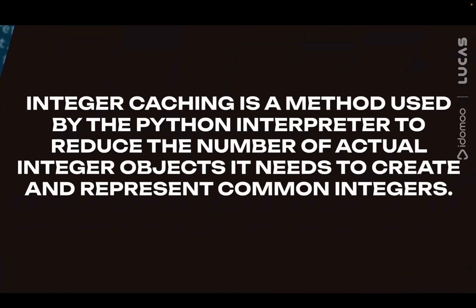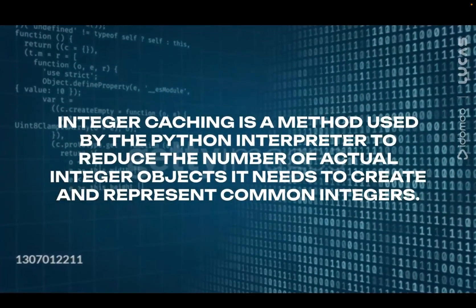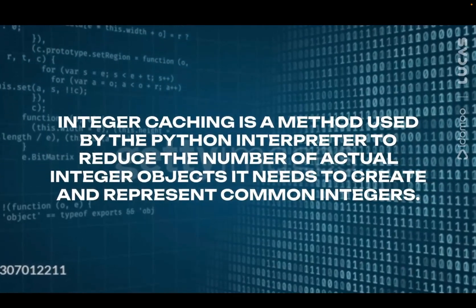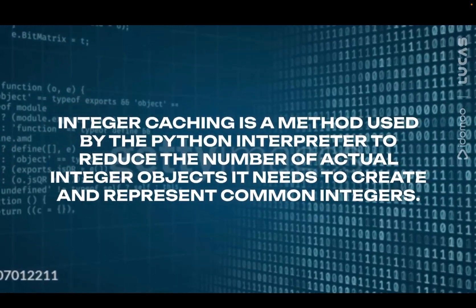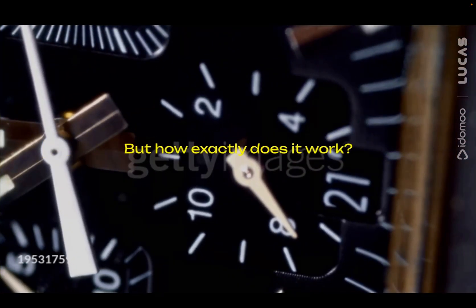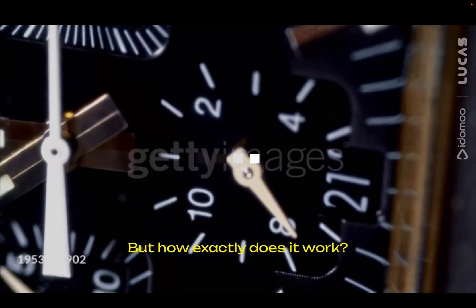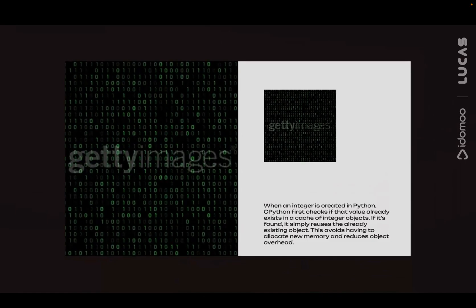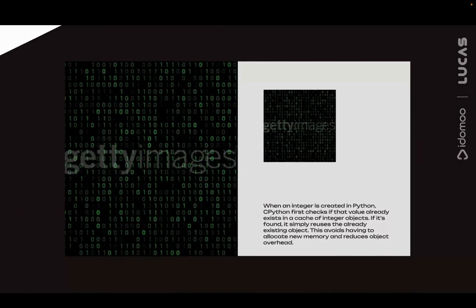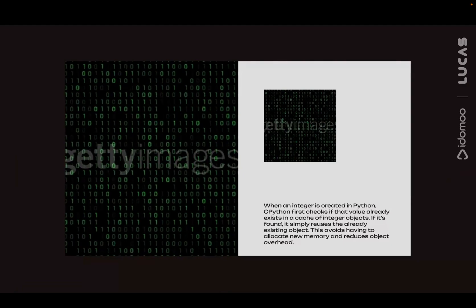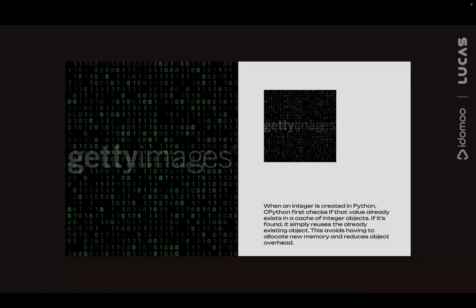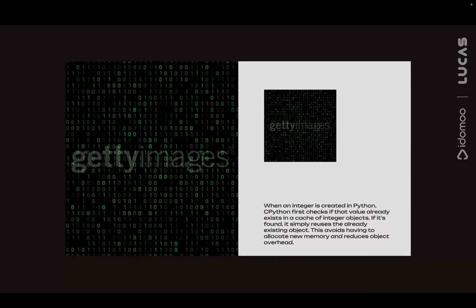Integer caching is a method used by the Python interpreter to reduce the number of actual integer objects it needs to create and represent common integers. But how exactly does it work? When an integer is created in Python, CPython first checks if that value already exists in a cache of integer objects. If it's found, it simply reuses the already existing object. This avoids having to allocate new memory and reduces object overhead.